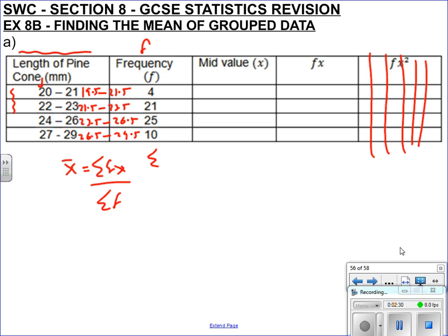ΣF means add up all the F's, so we know how many were surveyed in total: 4 plus 21 is 25, plus 25 is 50, plus 10 is 60 — so there were 60 pinecone lengths being measured.